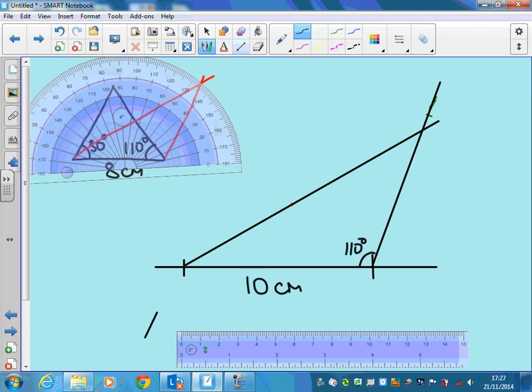What should the third angle be? That's right, 110 and 30 is 140. Angles in the triangle add up to 180, so the third angle should be 40 degrees. Get your protractor out, measure it, and make sure you've done it accurately.